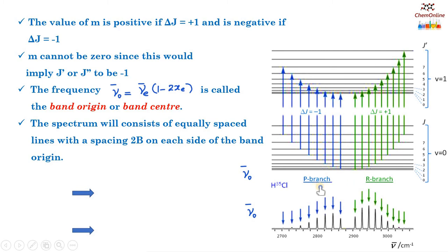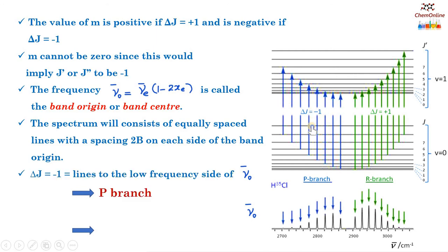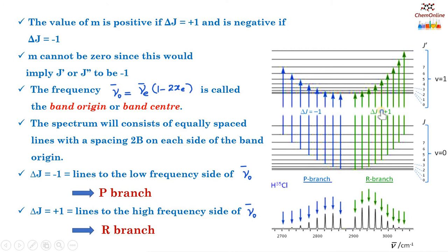This is the vibrational-rotational spectrum of a diatomic molecule like HCl. You can see a series of lines on the low frequency and high frequency side; the separation between these lines is 2B. Delta j equals minus 1 represents the lines on the low frequency side of ν̃_0, shown as blue lines here, referred to as the P branch. Delta j equals plus 1 represents lines on the higher frequency side, shown as green lines, called the R branch. Since m is not equal to 0, the line at ν̃_0 will not appear in this spectrum.